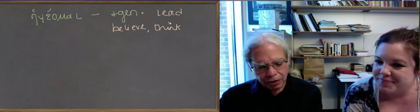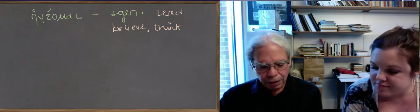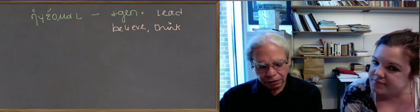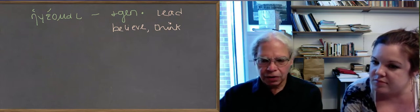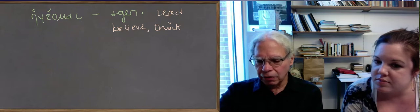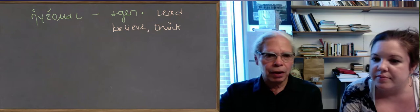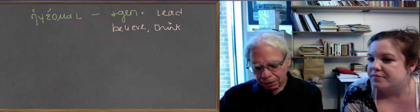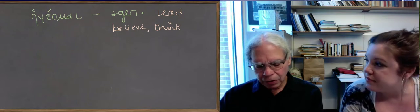Next we've got the adjective iesos, iese, ieson. Nothing remarkable about its form. It means equal, fair, or flat. It means flat in the sense of something that's level without bumps in it. In that sense, it's been equaled out or leveled out.